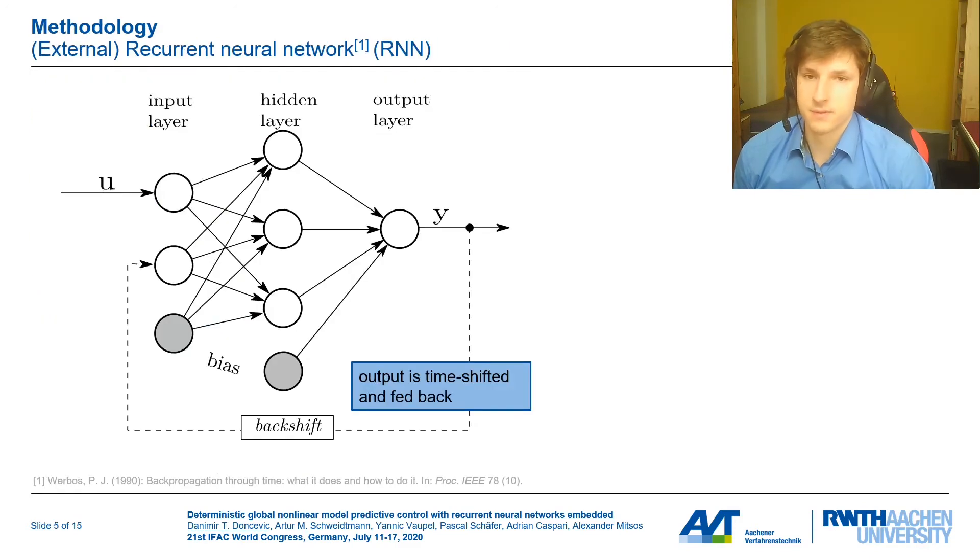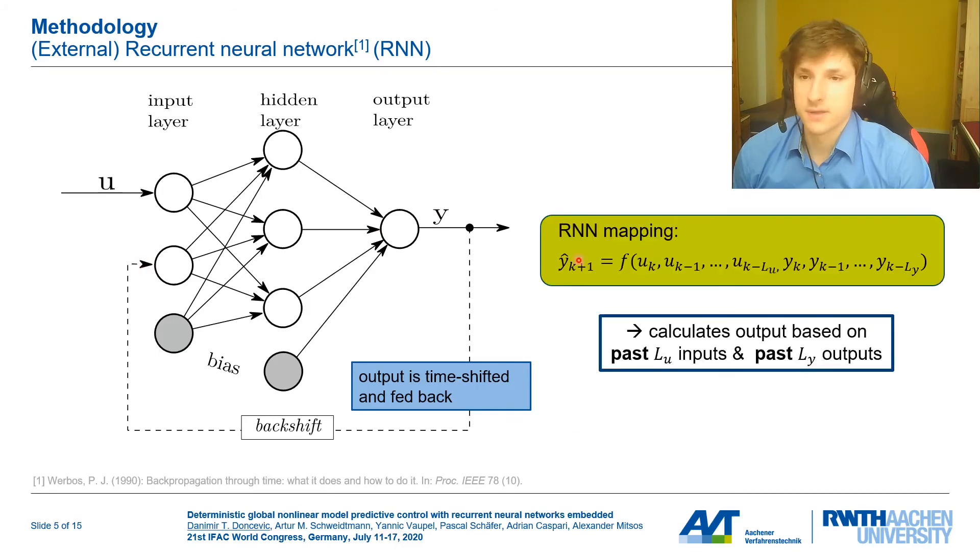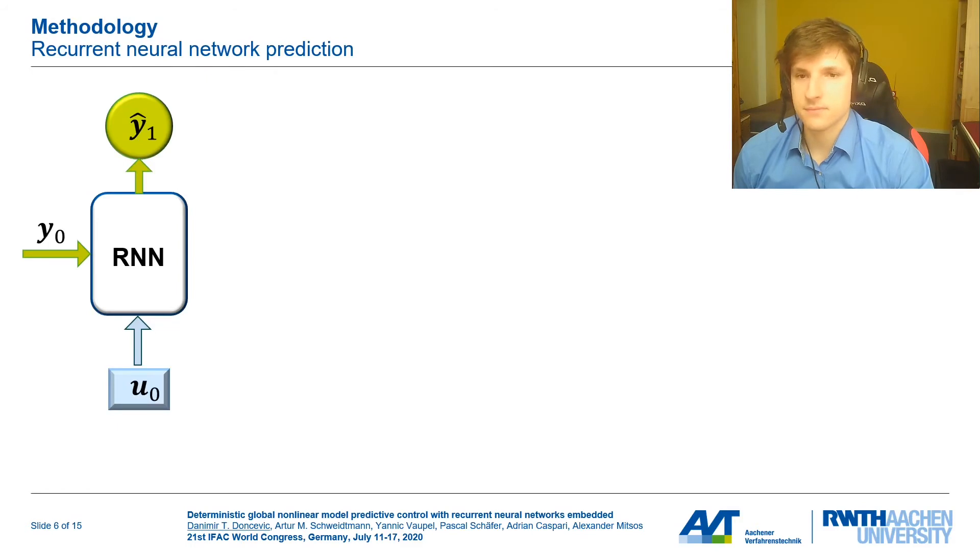This was the previous work done by our group. In this work, we are going to use recurrent neural networks to model a process. As you can see, the recurrent neural network is a feedforward network extended by this recurrent path right here. This allows us to learn a function where we predict an output based on previous inputs into the network and previous outputs of the network. Functions like this help us learn the explicit discrete-time dynamics of the system. Many dynamical systems can be modeled by such functions.